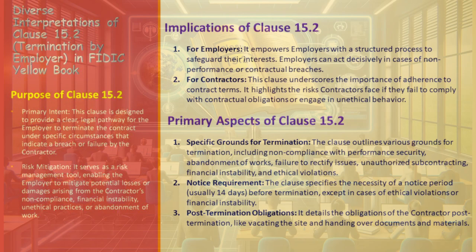For employers, Clause 15.2 offers a structured approach to protect their interests, providing the authority to take decisive action in situations of non-performance or contractual breaches. For contractors, it emphasizes the critical importance of adhering to contract terms, reminding them of the potential risks and consequences if they fail to fulfill contractual duties or engage in prohibited activities. Specific grounds for termination include non-compliance with performance security, abandoning the works, failing to rectify issues, unauthorized subcontracting, financial instability, and ethical violations.